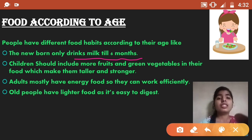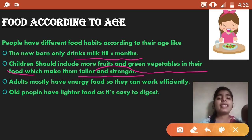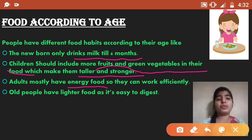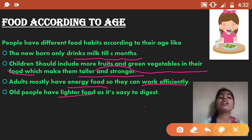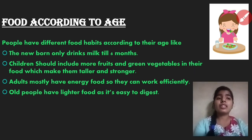Children of your age should eat more fruits and green vegetables in their food, because it makes them taller and stronger. Adults should eat energy food so they can work efficiently. Old people eat lighter food so it will be easy for them to digest, as heavy food is difficult to digest at that age.